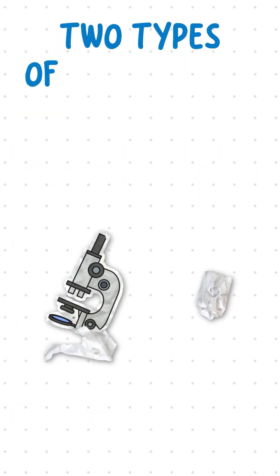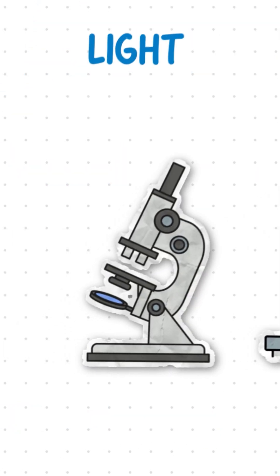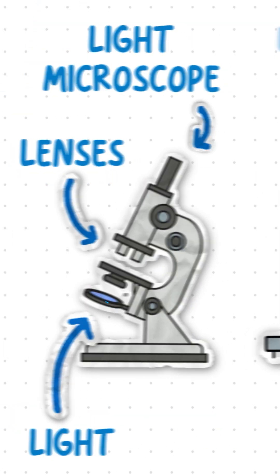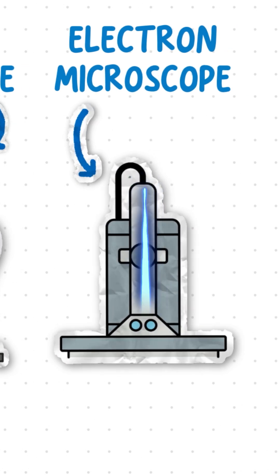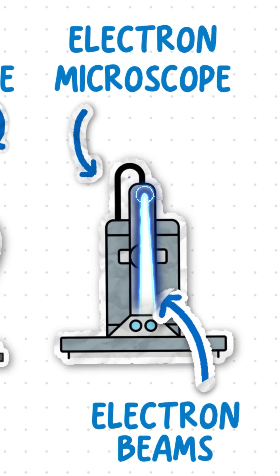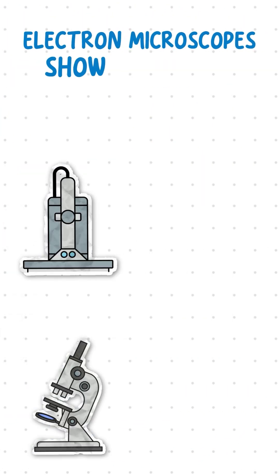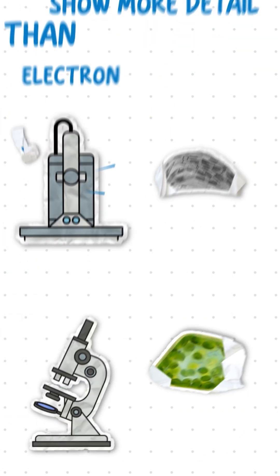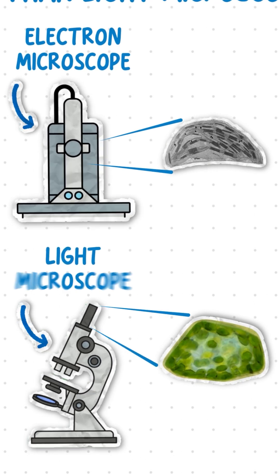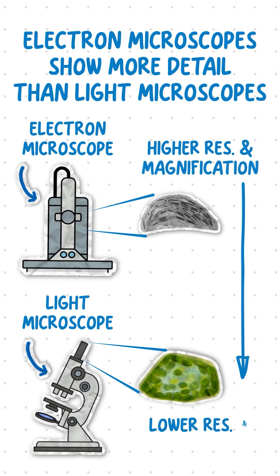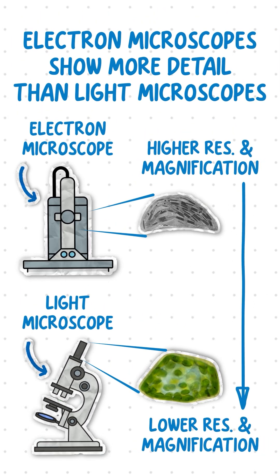There are two types of microscopes: light microscopes, which use lenses and light, and electron microscopes, which use electron beams to magnify objects. Electron microscopes show more detail than light microscopes because they have higher resolution and magnification.